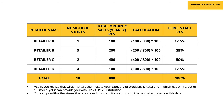Using the same example with ACV replaced by PCV: retailer C, with only 2 out of 10 stores, gives you as much as 50% PCV distribution. If you had to pick one retailer, you should pick retailer C. When prioritizing retailers by importance, retailer C comes first at 50% distribution, then retailer B at 25%, then retailer A at 12.5% — all with just one outlet.